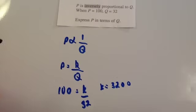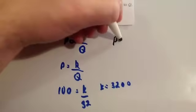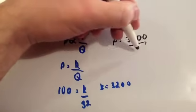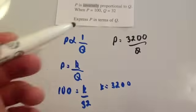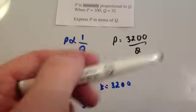So, the formula would become, whenever you put this K back in, so the answer to the question, expressing P in terms of Q, would be P equals 3,200 divided by Q. So, whenever you find the constant of proportionality, that's your formula.